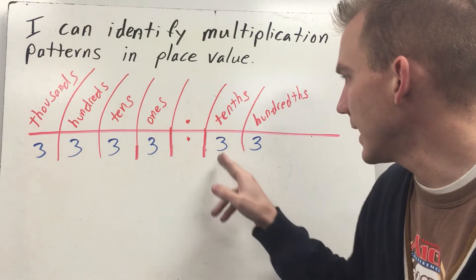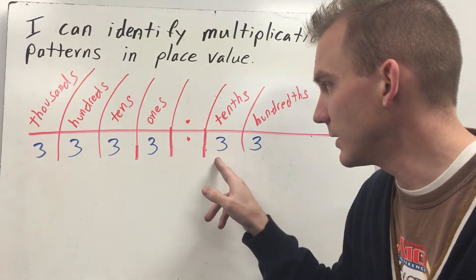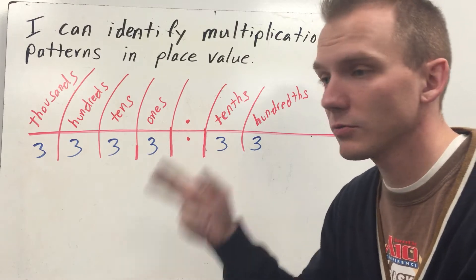So three hundredths, if I multiply that by ten, I'd have three tenths. If I did three tenths times ten, I have three ones.